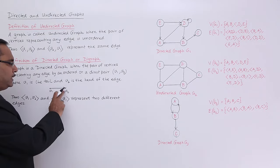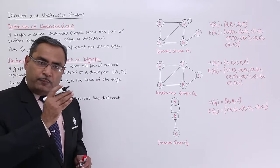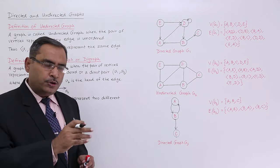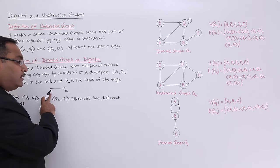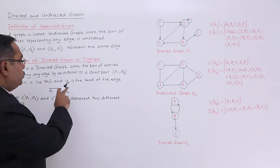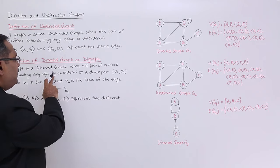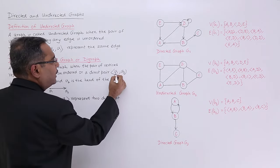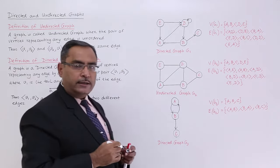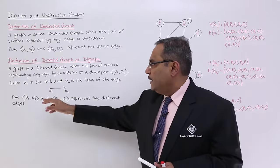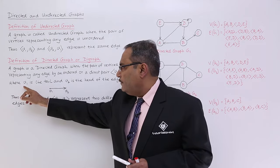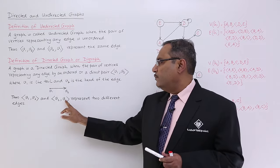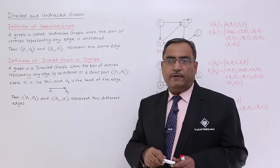Let us suppose we are having this particular V1 and V2. So from V1 the edge has been originated and it has got terminated to V2. So it will be known as the tail and it will be known as the head. So that is why it is written that any edge by an ordered or a direct pair V1 and V2. Obviously here where V1 is the tail and V2 is the head of the edge, thus V1 V2 and V2 V1 represent two different edges.